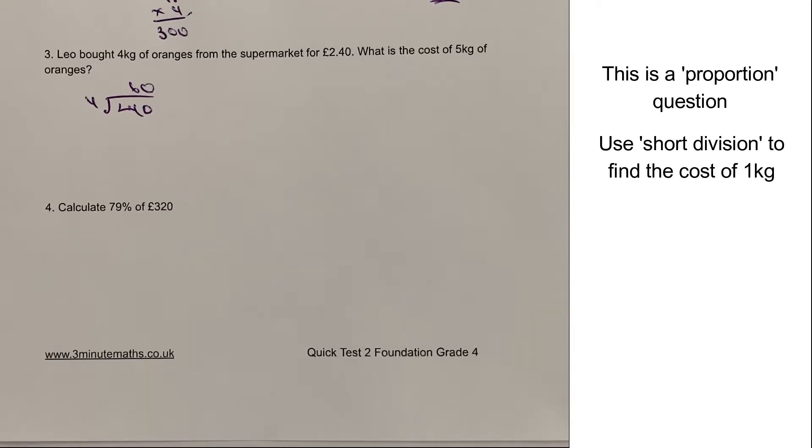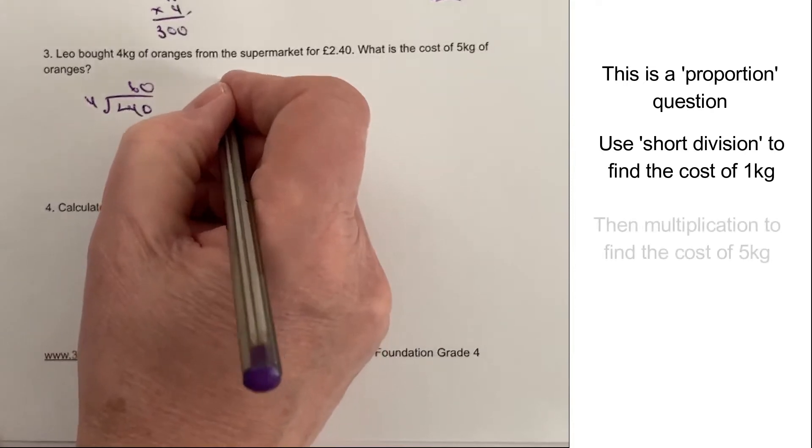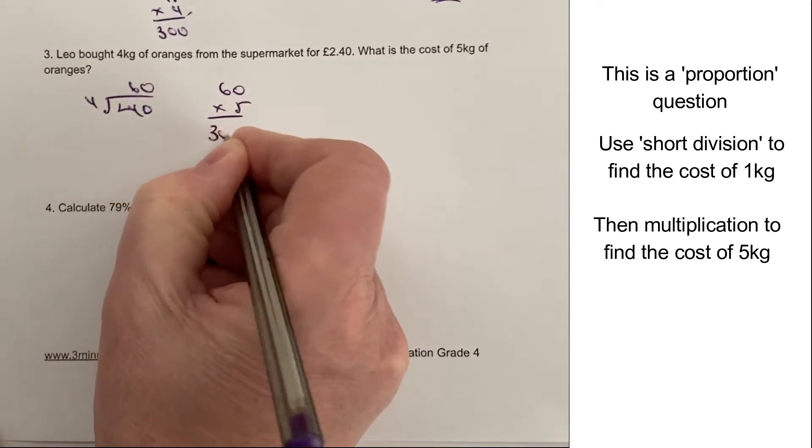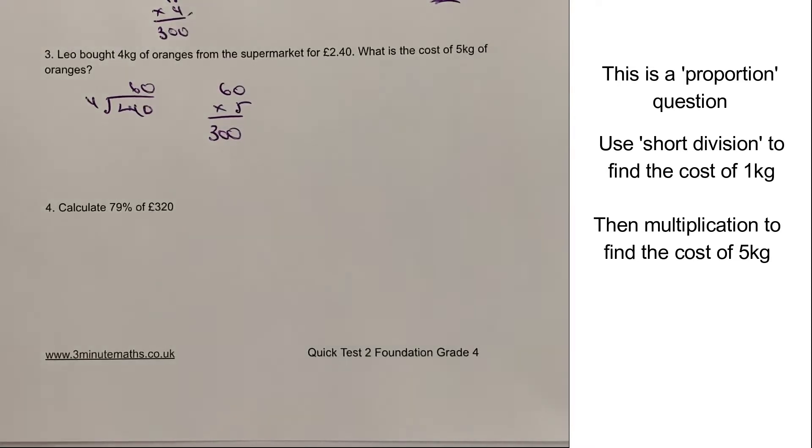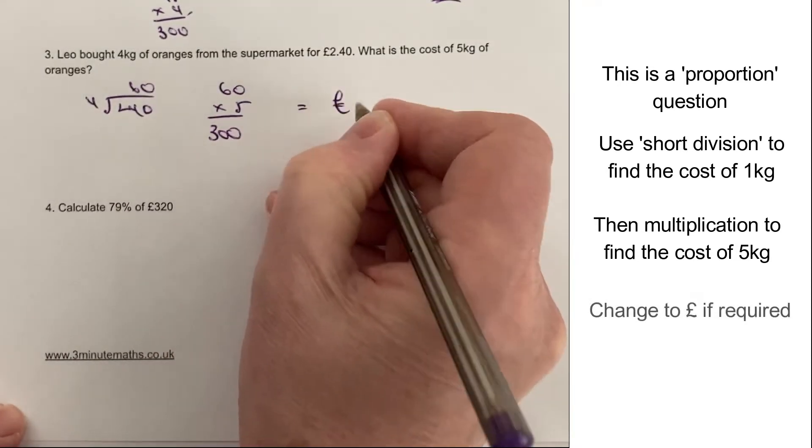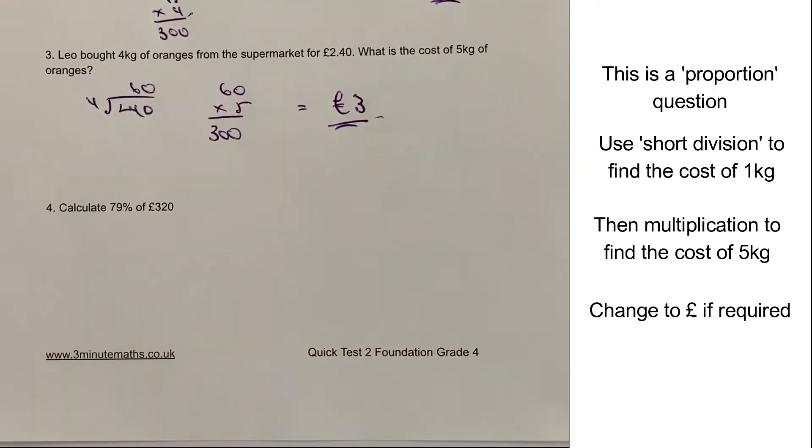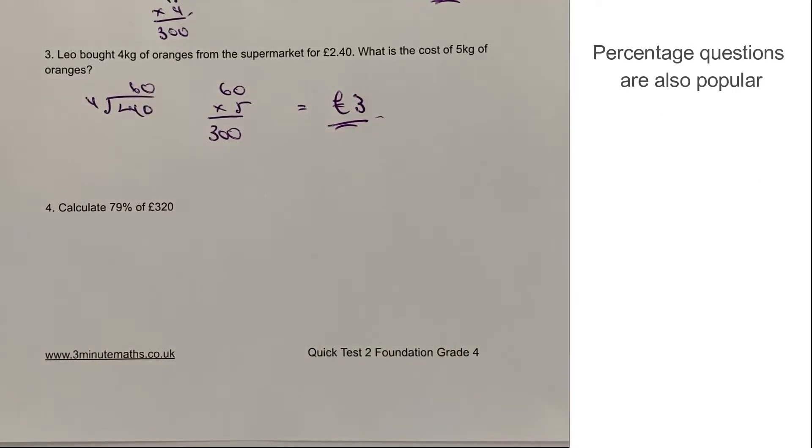So in this particular case, he's spending 60p per kilogram. So if he wants to buy five kilograms, it's going to be 60 multiplied by five. And that's going to give us 300 pence. Now, 300 pence is exactly the same as saying £3, which is the answer to question number three.